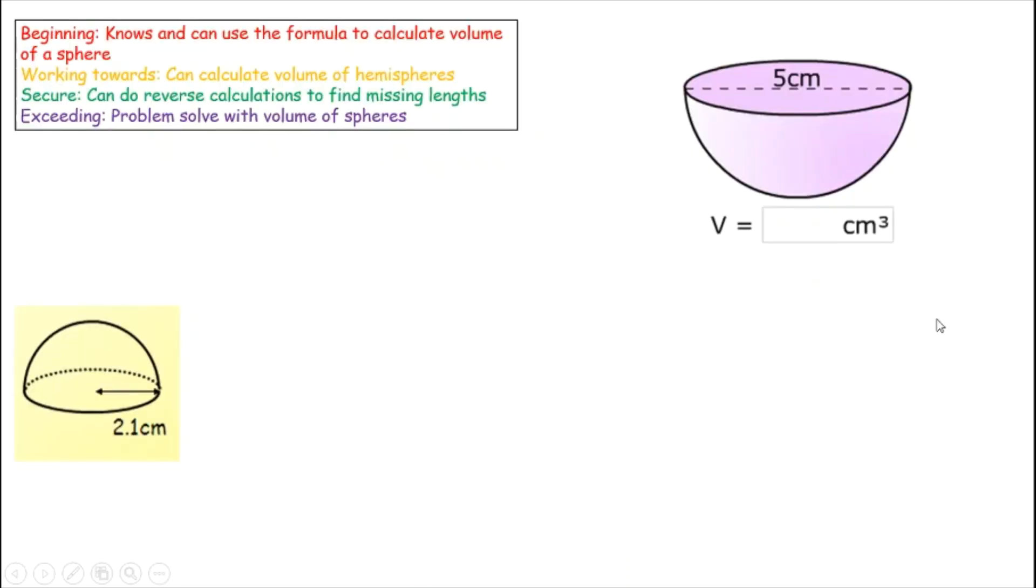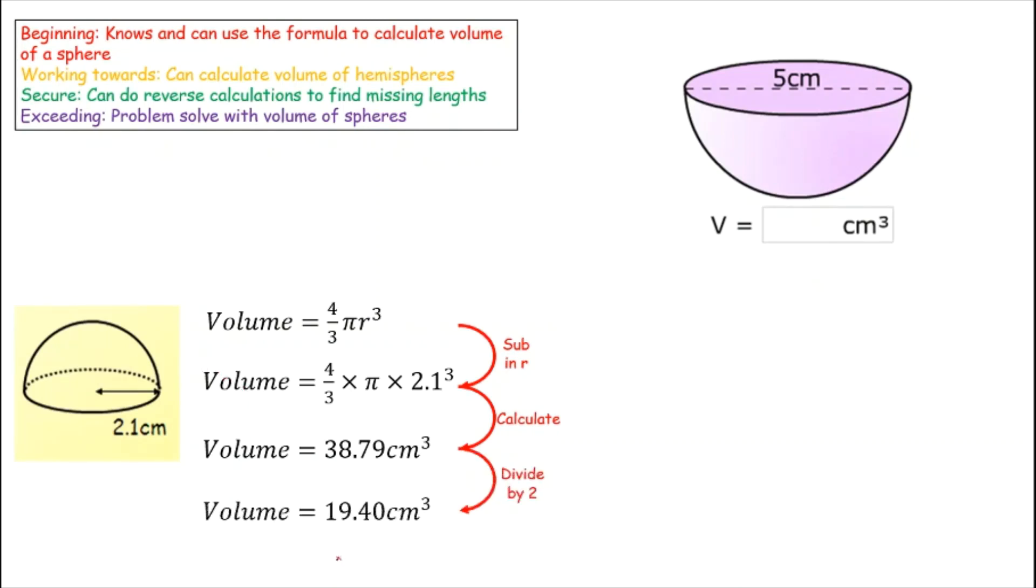Now the only other thing I want to show you today is the volume of a hemisphere. A hemisphere is half of a sphere, so it's literally I've cut it in two. To work out the volume of a hemisphere, we are first going to work out what was the volume if this had been a whole sphere. So we'll do exactly what we did before, use the same formula, substitute in our 2.1, write that down for the first mark, and then put it through your calculator. 38.79 is the volume of a whole sphere, but I only want the hemisphere, the half circle. So if I want a half of one, I just divide by two. My final answer for the hemisphere is 19.40 centimeters cubed. So a hemisphere is half of a full sphere, so work out the full sphere first and then just divide your answer by two.